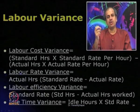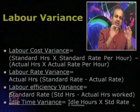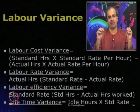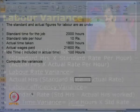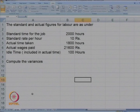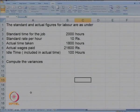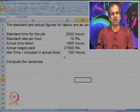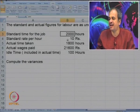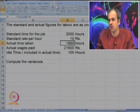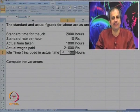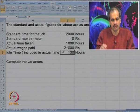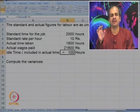So idle hours × standard rate gives us idle time variance. Labor efficiency variance looks at actual hours worked versus what they should have worked, so we take standard hours minus actual hours. Overall, labor cost variance is broken down into rate, efficiency, and idle time. Now let us look at a case so that how to calculate labor variances becomes clearer. The problem gives standard time for a job as 2,000 hours, standard rate per hour as 10, actual time as 1,800 hours, actual wages paid as 21,600, and idle time included in actual time as 100 hours.